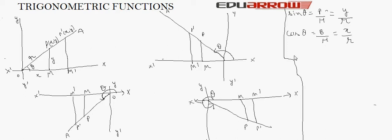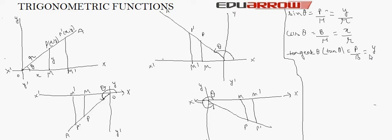The next ratio is tangent. Tan theta is equal to perpendicular upon base, written as P over B. Here perpendicular P is y, and base B is x, so tan theta equals y over x.